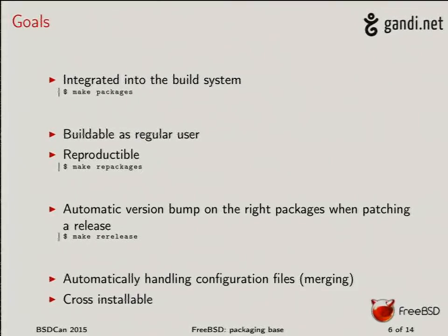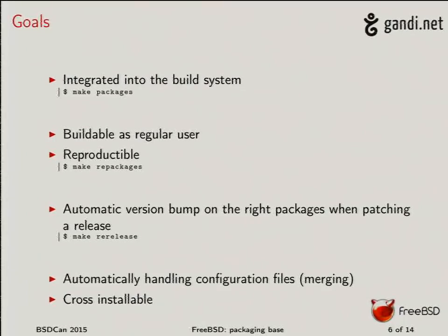We want reproducible builds and reproducible packages, so if you're on the same tree and build twice from the same source, you get the same packages with the same checksums. This enables a simple upgrade mechanism for security updates and errata — if a file has been modified because a header was patched, we can go through all files and identify which packages were affected, bump the version of that package, and the user just installs the new stuff.